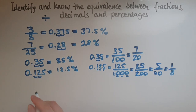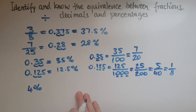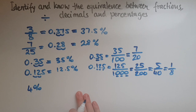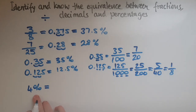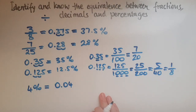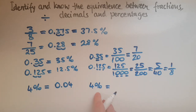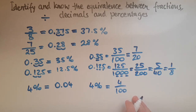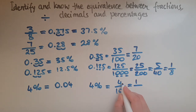Now for percentages — let's say we have 4 percent and convert it into a decimal and fraction. To convert to a decimal, 4 percent is like 4 pence, written as 0.04. As a fraction, percent means out of a hundred, so that's 4 over 100. Simplifying by dividing both by 4 gives us 1 over 25.